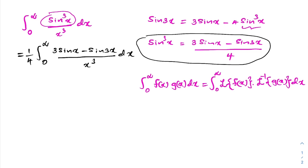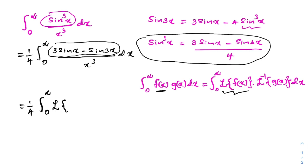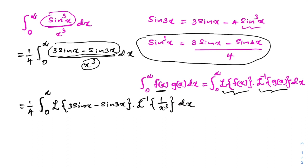We can apply this identity to our integral, so we write it as 1/4 times the integral from 0 to infinity of the Laplace transform of (3 sin(x) − sin(3x)) times the inverse Laplace transform of 1/x³ dx.